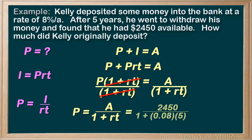And we come out with $1,750. So that's our answer. Kelly originally deposited $1,750 in the bank.